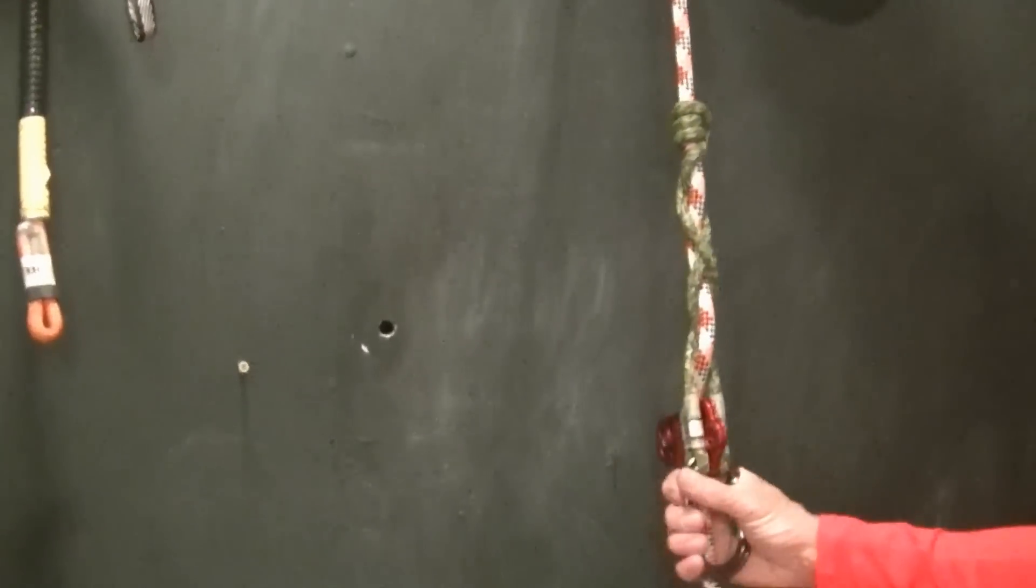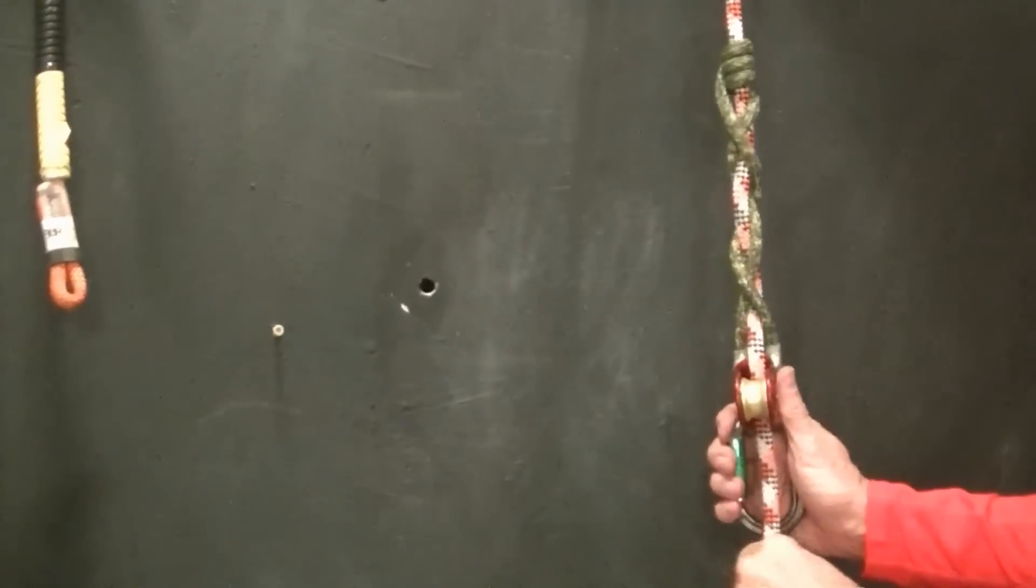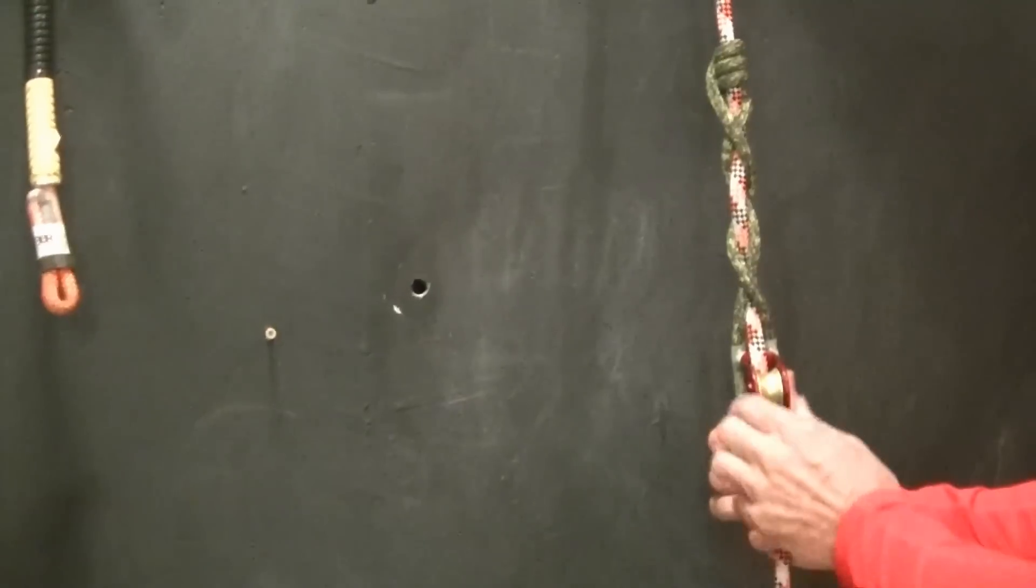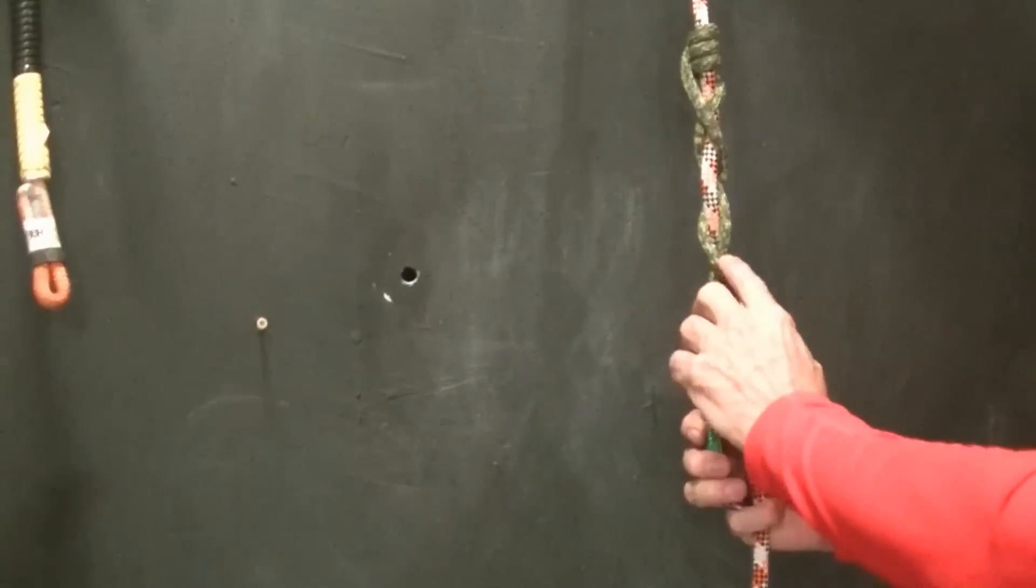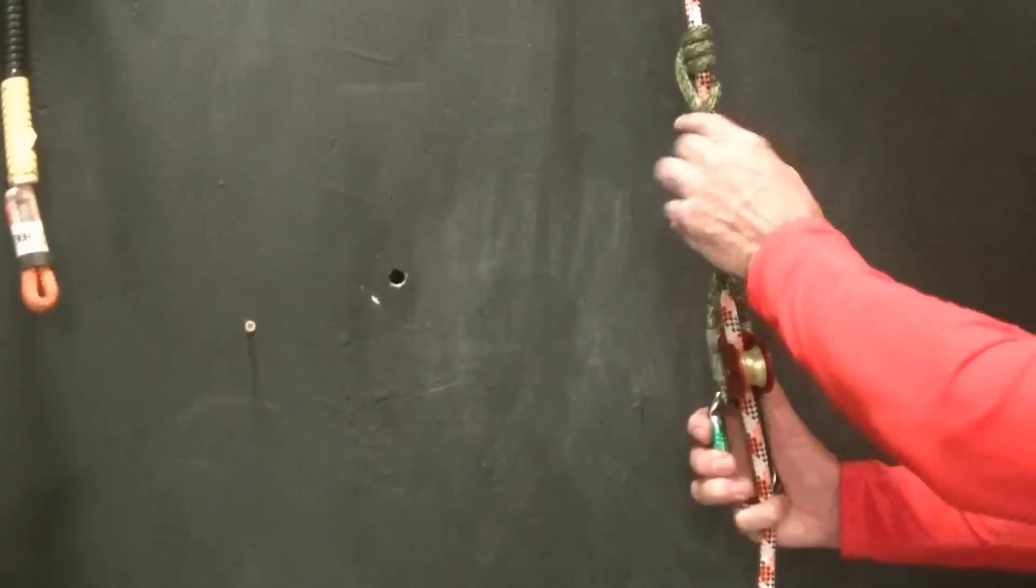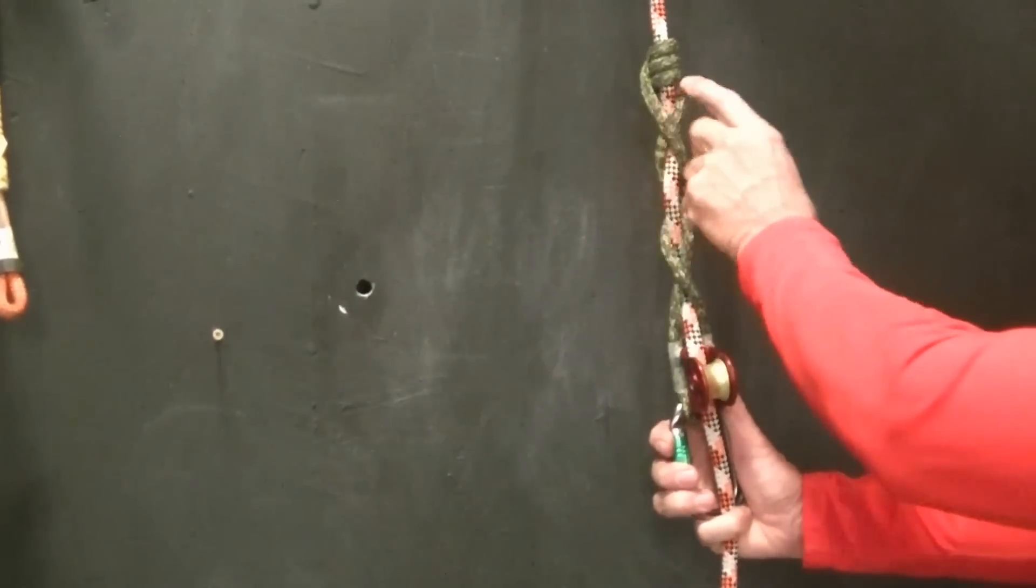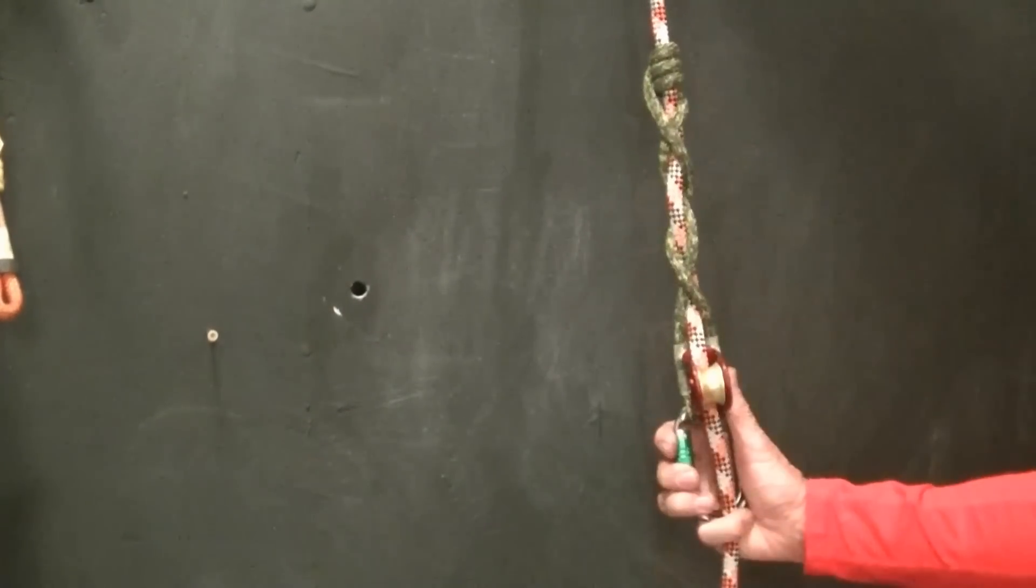If you look at it from the other orientation, again, here's your braid and here's your bind. But you have one, two, three braids and one, two, three wraps.